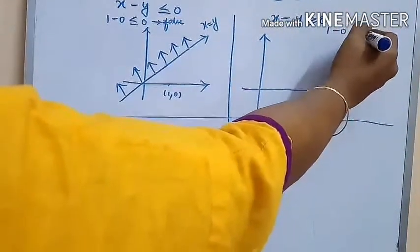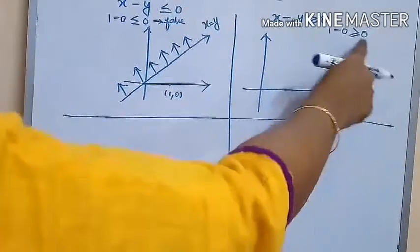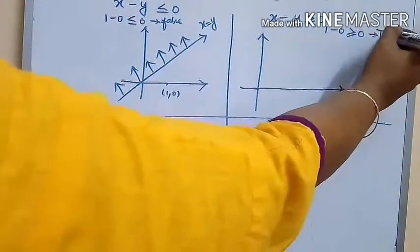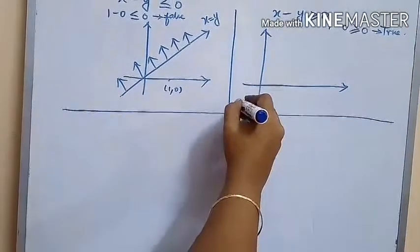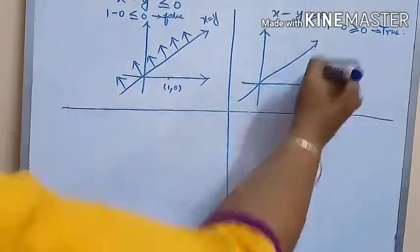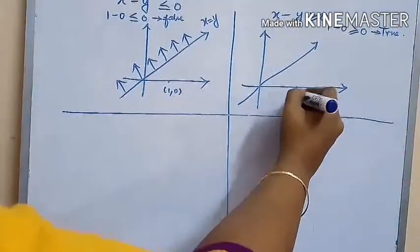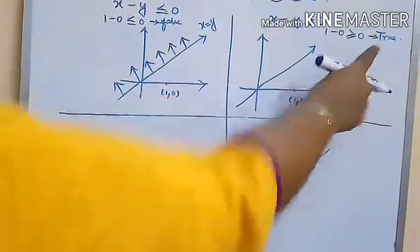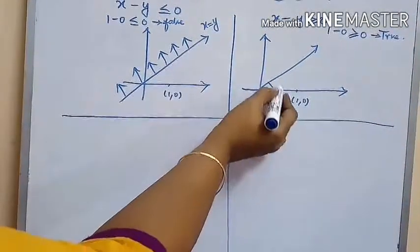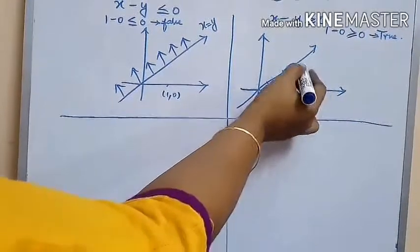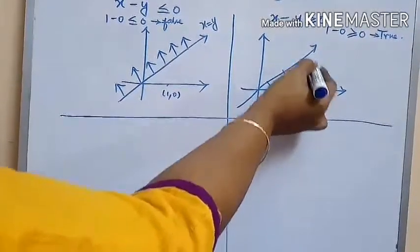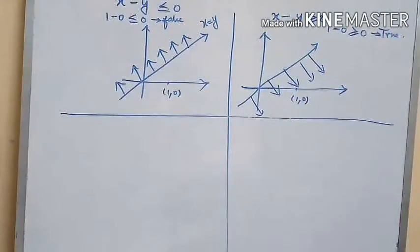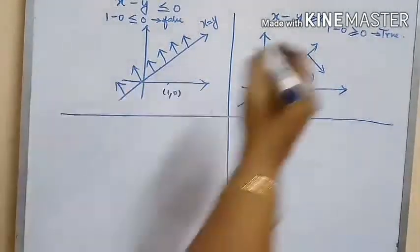Now substitute (1, 0) into the inequality X minus Y greater than or equal to zero: we get 1 greater than zero, which is a true statement. Since the statement is true, we need to shade the region containing the point (1, 0).